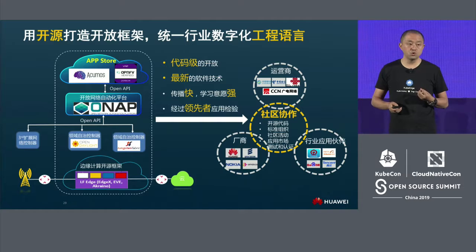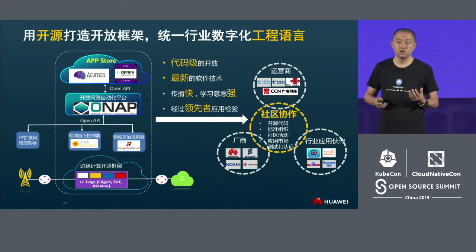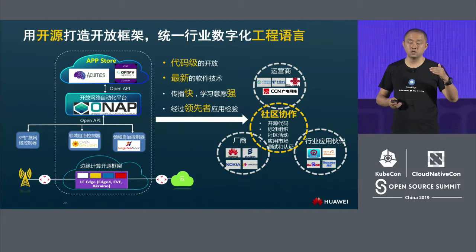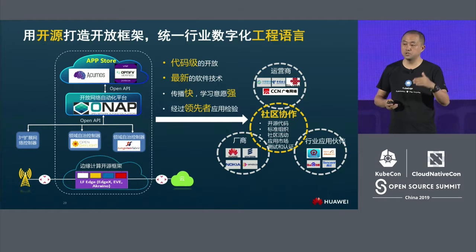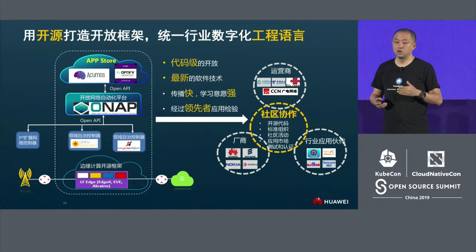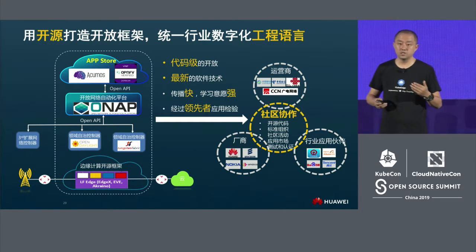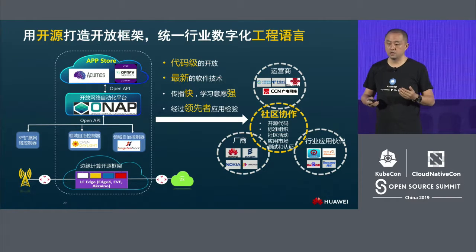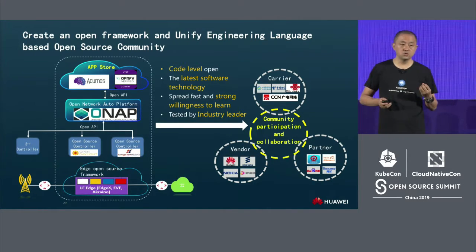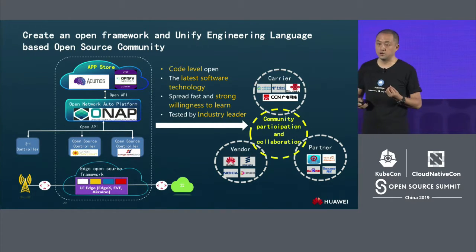Digital development of industry will need this open ICT framework. On different layers there are different open projects. For the ecosystem, we can have open big certification to build a shared app store. We can also build an open automation platform, and use LF Edge to help with the edge computing stack technology.